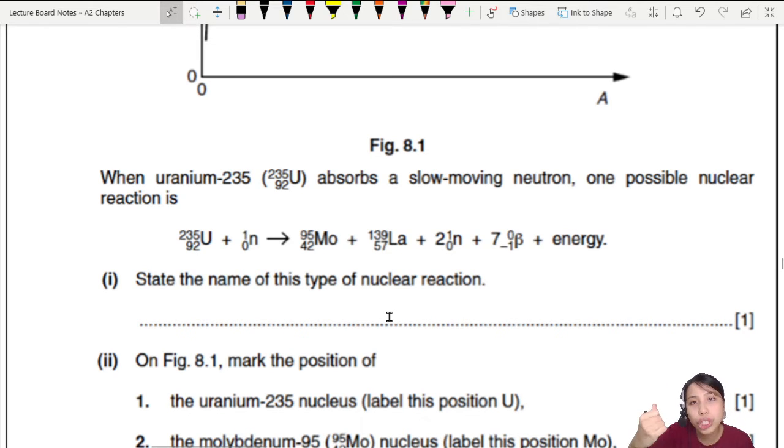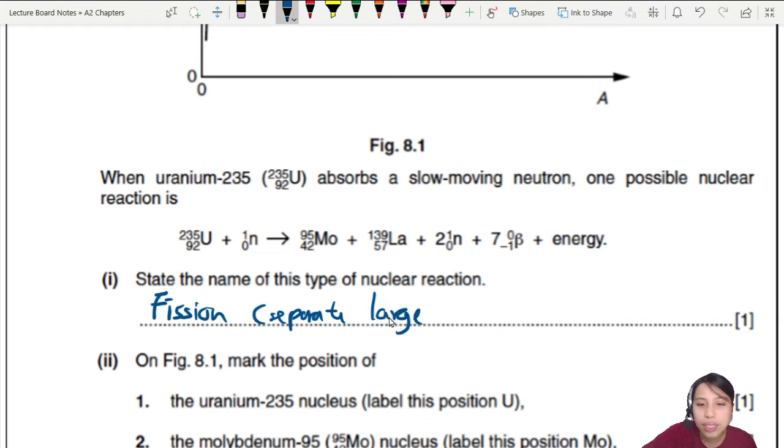State the name of this type of nuclear reaction - it's either fusion or fission. This is uranium-235, very big, split into smaller ones. So this is gonna be fission. You can say fission is to separate a large nucleus - in this case a heavy nucleus, uranium - so one become two smaller things is fission. One mark.